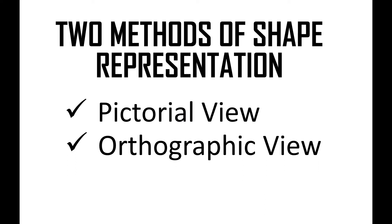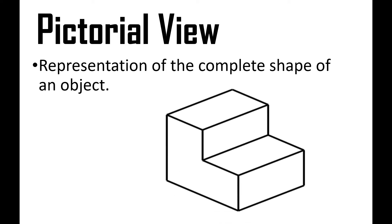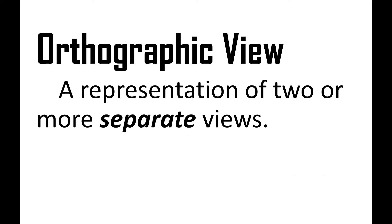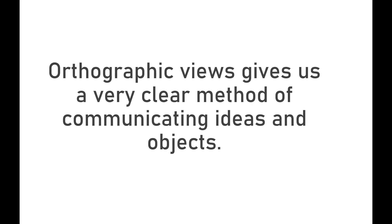To further understand how orthographic drawing is drawn, let us first have the two methods of shape representation. The first is the pictorial view, and second is the orthographic view. Pictorial view is the representation of the complete shape of an object. On the orthographic view, it is a representation of two or more separate views. Orthographic projection is a way of showing a three-dimensional or 3D object in two-dimensional. Orthographic views give us a very clear method of communicating ideas and objects.